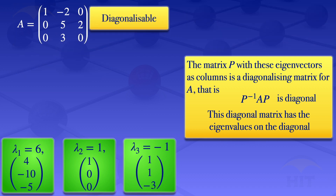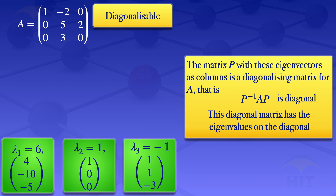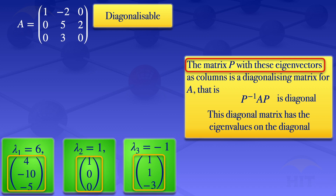We can now construct the matrix P which diagonalizes this matrix. The matrix P has the eigenvectors as columns: (4, -10, -5), (1, 0, 0), and (1, 1, -3). So our matrix P is the matrix with rows 4, 1, 1 / -10, 0, 1 / -5, 0, -3. This matrix P has columns which are eigenvectors of the given matrix.